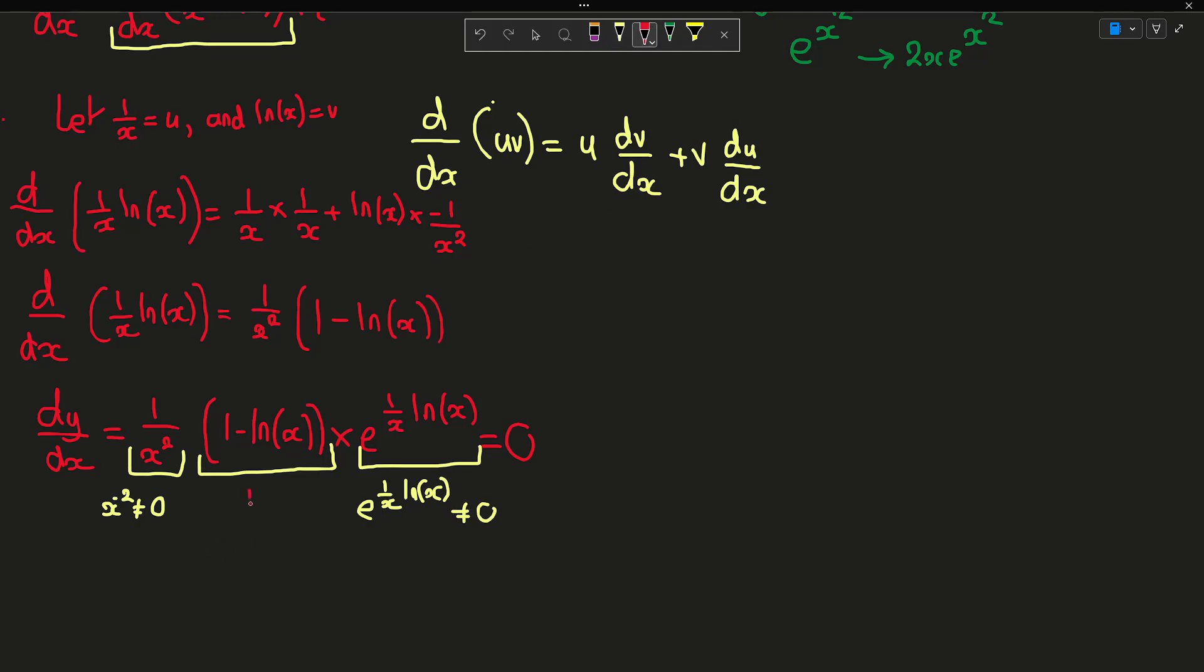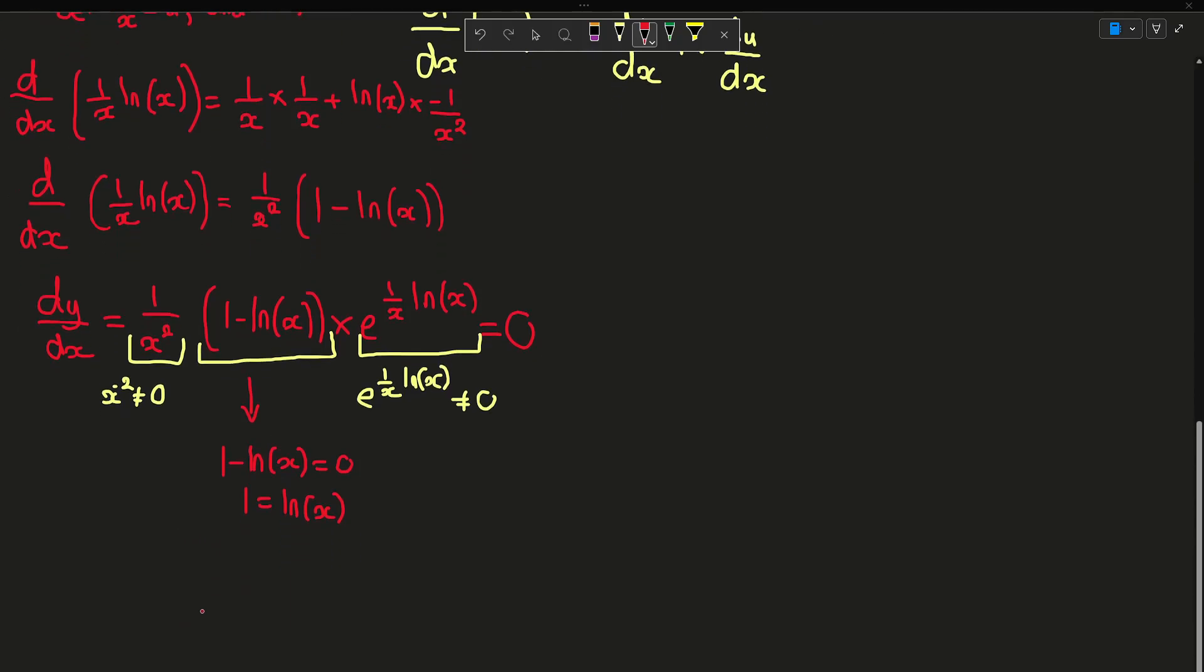Which means the only component we can really use is this, which is 1 minus ln x. And we need to find out when this is equal to 0, since if even one component is 0 the entire thing is 0. So we can now say that, rearranging this, 1 equals ln x. And then we can just say that e to the 1 equals x. And there we have it, we can say that x is equal to e. So the maximum for the x root of x is when x is equal to e.